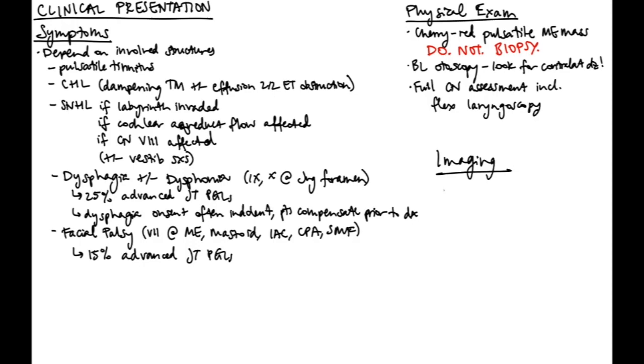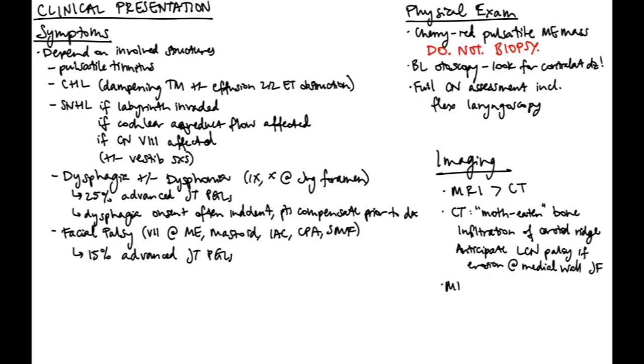On imaging, MRI is more sensitive than CT in identifying all the infiltrative fronds of a paraganglioma, but both can lead to a diagnosis. On CT, you'd see moth-eaten bone because of infiltration. You may see infiltration of the carotid ridge and definitely anticipate a lower cranial nerve palsy if you see erosion at the medial wall of the jugular foramen. On MRI, they have a classic salt and pepper appearance because there's flow voids in such a vascular tumor when you're looking at T1 with contrast enhancement. Again, MRI is really best for determining the intracranial extent and the status of any of your cranial nerves.